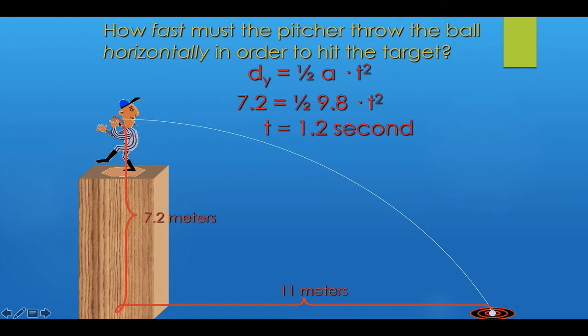The ball is in the air for 1.2 seconds and needs to travel 11 meters horizontally. To find the required speed, we divide 11 meters by 1.2 seconds, giving us a horizontal speed of 9.1 meters per second. Horizontal launch problems are straightforward, but angled launches are more challenging.